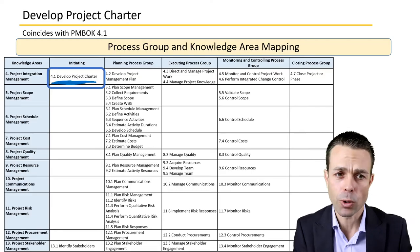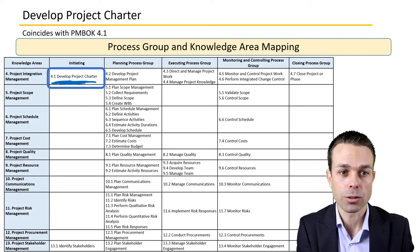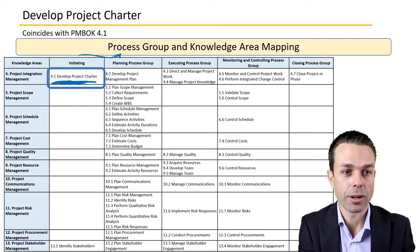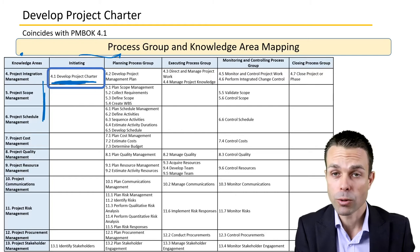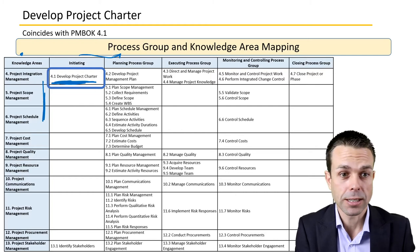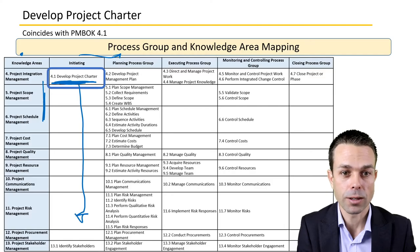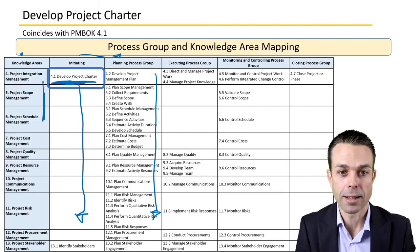The way this works, we've got our process groups up the top here, and we've got our knowledge areas along the side. The way you'll usually see this is it will go from top to bottom, then to the next one top to bottom, then the next one top to bottom.